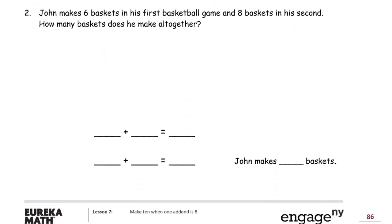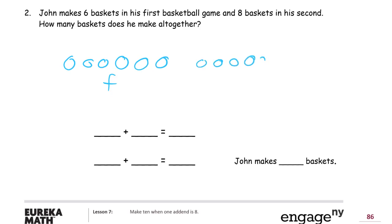Number 2. John makes 6 baskets in his first basketball game and 8 baskets in his second. How many baskets does he make altogether? So 6 baskets in his first game — 1, 2, 3, 4, 5, 6. That's his F for first game. And then 8 — 1, 2, 3, 4, 5, 6, 7, 8 in his second game.